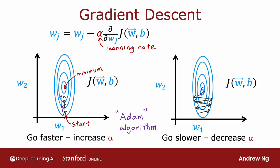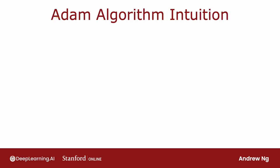So depending on how gradient descent is proceeding, sometimes you wish you had a bigger learning rate alpha, and sometimes you wish you had a smaller learning rate alpha. So the Adam algorithm can adjust the learning rate automatically. Adam stands for Adaptive Moment Estimation, or A-D-A-M. And don't worry too much about what this name means. It's just what the authors had called this algorithm.